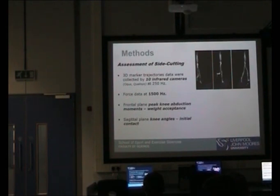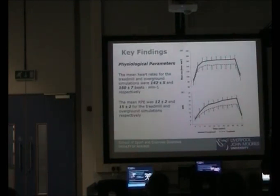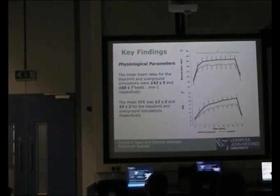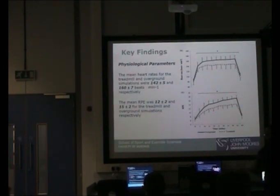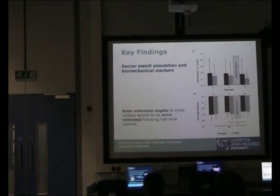Based on the physiological parameters, we found that the mean heart rate and RPE for the overground match simulation were similar to what has been observed during a soccer match and also similar to previous overground and treadmill match simulations. The heart rate and RPE of the overground were higher compared to the treadmill simulation, likely due to the inclusion of acceleration, deceleration, and multi-directional movement. We did not find any significant changes in the biomechanical markers after 45 minutes of match simulation. However, interestingly, we found the knee was more extended following the half-time interval, indicating an increased injury risk during the early stages of the second half.